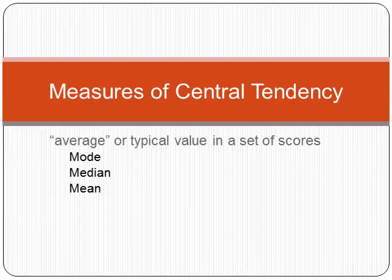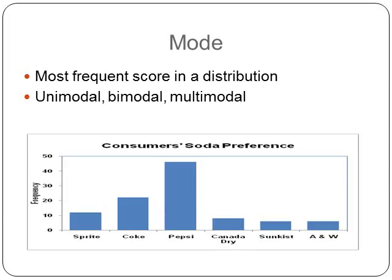Measures of central tendency give us the average or typical value in a set of data. We can think of the three M's: mode, median, and mean. Mode is the most frequent score in a distribution. When we have one mode it's unimodal, two modes is bimodal, and many modes is multimodal. We can see in our previous data set that we had a unimodal distribution.